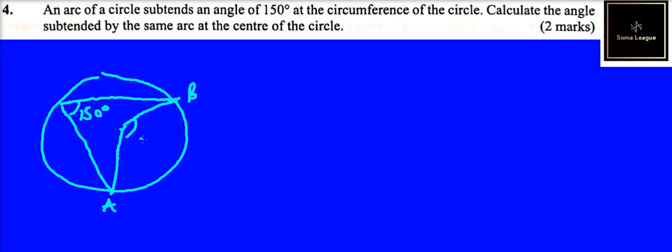the angle subsided at the center is normally twice the angle subsided at the circumference. And therefore, you multiply 150, you multiply by 2, which you get, it is 300 degrees.